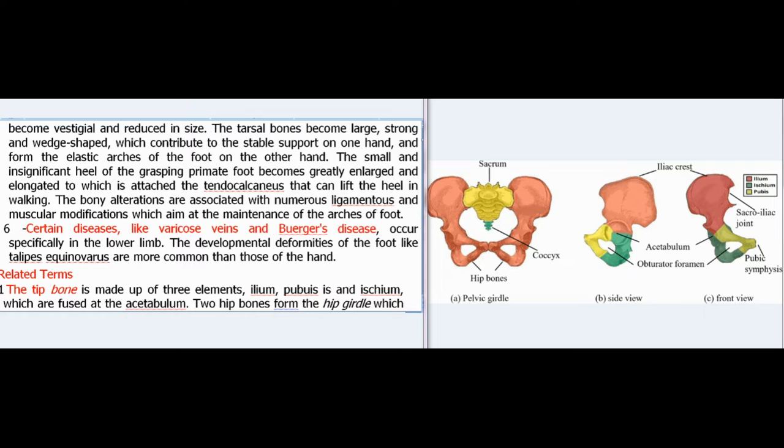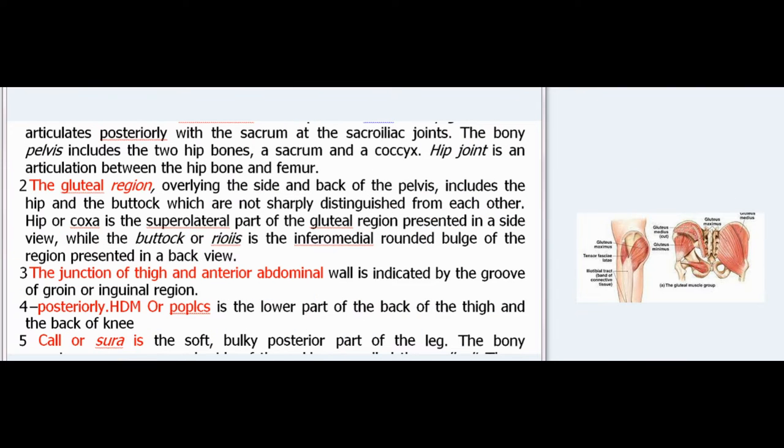Related terms: The hip bone is made up of three elements—ilium, pubis, and ischium—which are fused at the acetabulum. Two hip bones form the hip girdle, which articulates posteriorly with the sacrum at the sacroiliac joints. The bony pelvis includes the two hip bones, a sacrum, and a coccyx. The hip joint is an articulation between the hip bone and femur. The gluteal region overlying the side and back of the pelvis includes the hip and the buttock, which are not sharply distinguished from each other.